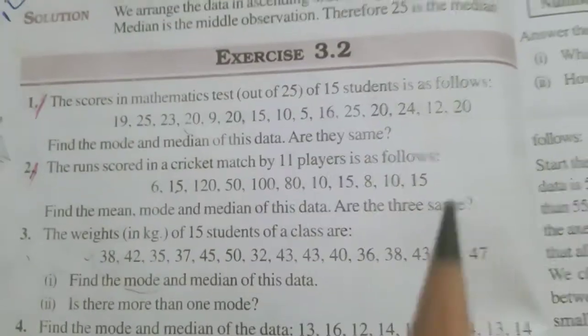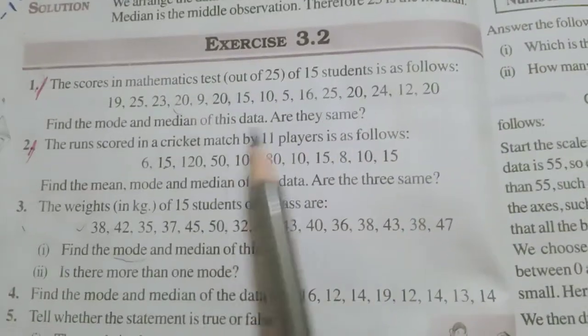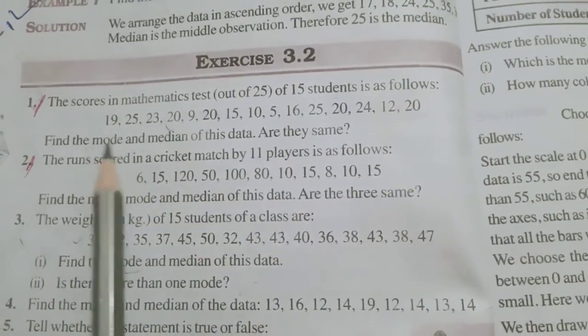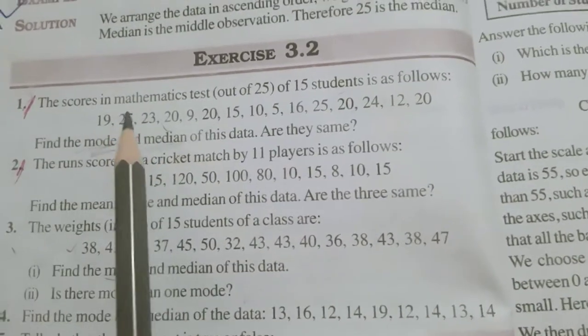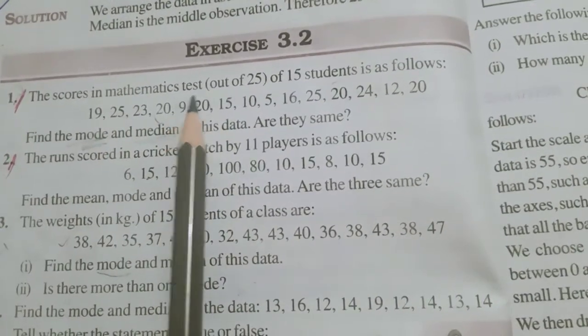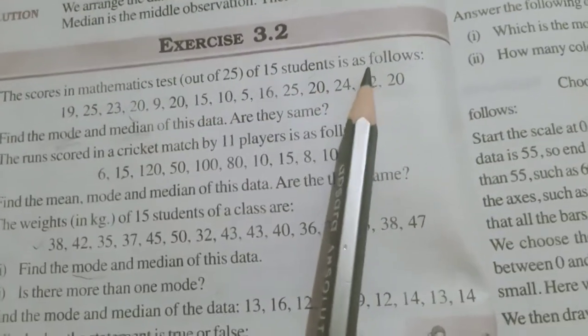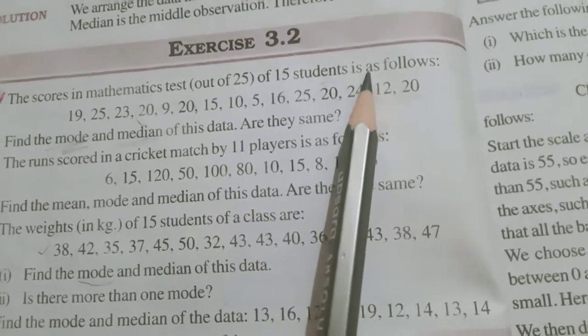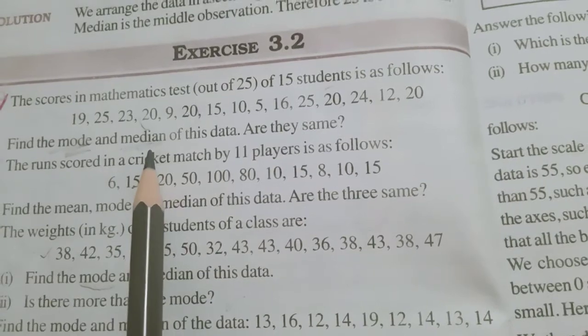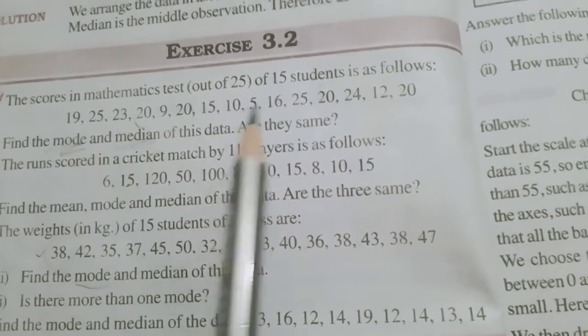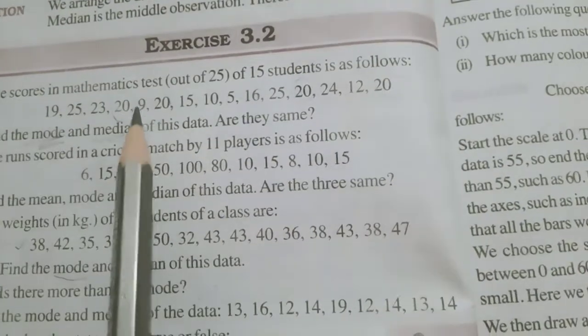Now, we start exercise 3.2. Initially, you solved this exercise 3.2 for mode. For the mode problem, you already solved this exercise. Now, we solve for median. Okay? The scores of mathematics out of 25 of the 15 students is as follows. I explained this example clearly when I taught you mode. Now, we concentrate on median. Again, for finding the median, we arrange the data in ascending order. Then, for ascending order, find the smallest number.